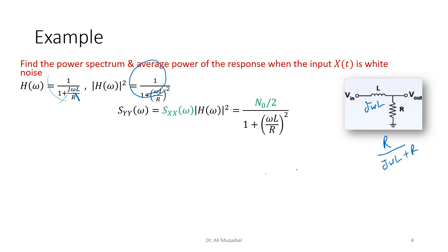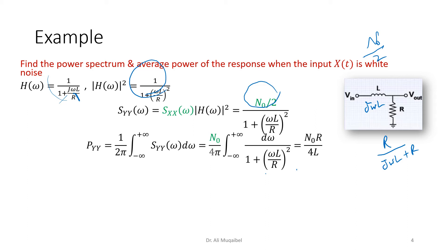Now we have the transfer function. The power spectral density of white noise is N₀/2. With the PSD of the input known and the transfer function determined, we can write the output PSD. Doing a bit of simplification, to find the average output power we integrate the output power spectral density, and the answer is N₀R / (4L).